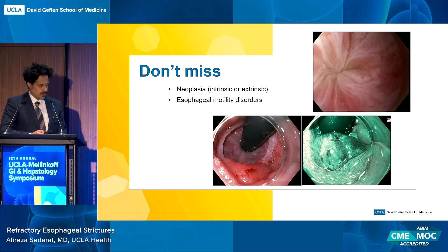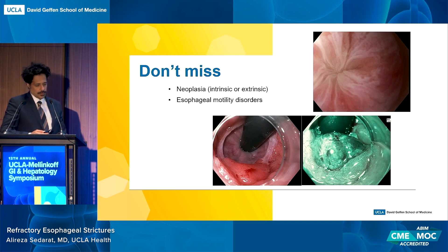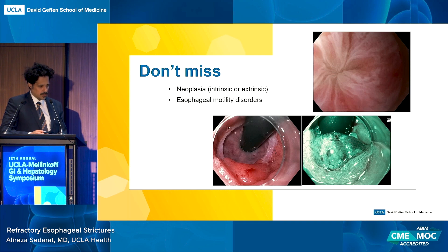What you don't want to miss are neoplasias and motility disorders. Everything I'm going to tell you doesn't really apply to cancers or achalasia. They have very distinct appearances that are different. There's a pre-POEM spastic LES on the upper, and in the middle, a very subtle T1 cancer just before we ESD'd, kind of tucked in the hiatal hernia sac.